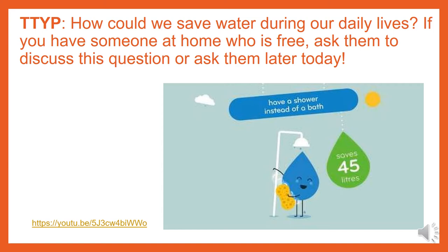Over one third of the water we use at home goes down the toilet, so if it's yellow, why not let it mellow? Put a full washing load on rather than two half loads. We think our tap water is the best in the world — this is one area you should not cut back on. So keep a jug of water in the fridge so you don't have to run the tap as long for a cold drink.